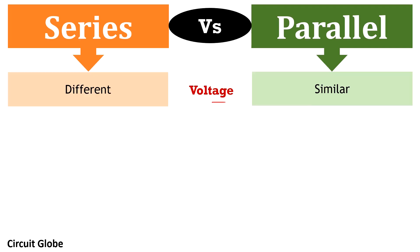The next parameter is voltage. In a series circuit, the voltage drop across each component will be different, because each component has an individual connecting point. While in a parallel circuit, the voltage across each component will be the same, because of the head-to-head and tail-to-tail connection of the various components.